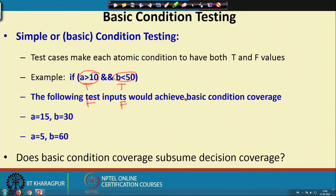This gives us a hint that basic condition coverage may not be a very strong coverage criterion. Does achieving basic condition testing ensure branch coverage — is it stronger, weaker, or complementary to decision coverage? We will discuss this point and the other white box testing strategies in the next lecture.